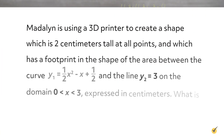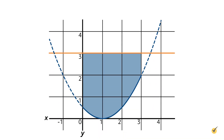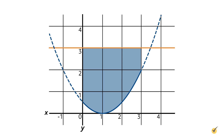Let's try another problem now. Madeline is using a 3D printer to create a shape which is 2 centimeters tall at all points, and which has a footprint in the shape of the area between the curve y₁ equals one-half x² minus x plus one-half and the line y₂ equals 3, on the domain x from 0 to 3, expressed in centimeters. What is the volume in centimeters cubed of this shape? Let's graph the area between y₁ and y₂ on the domain x from 0 to 3. This area describes the footprint of Madeline's shape — what the shape looks like if you look down at it from directly above.